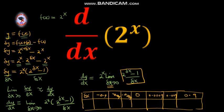For x = -0.9, we get 0.50. For x = -0.009, we get 0.6910. For x = -0.0009, we get 0.6929.